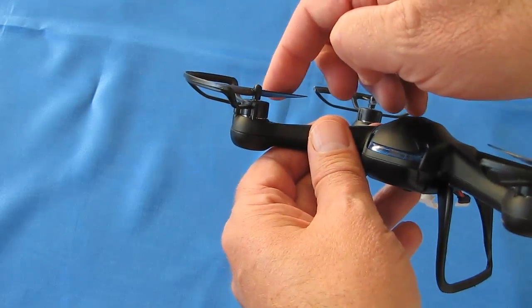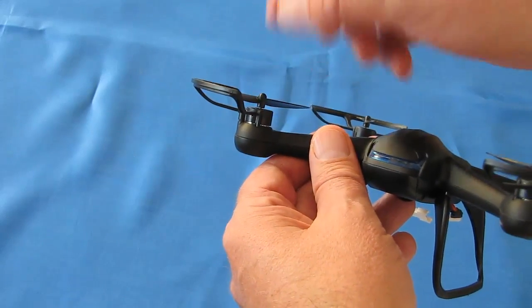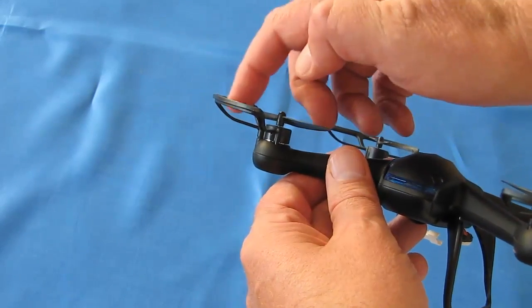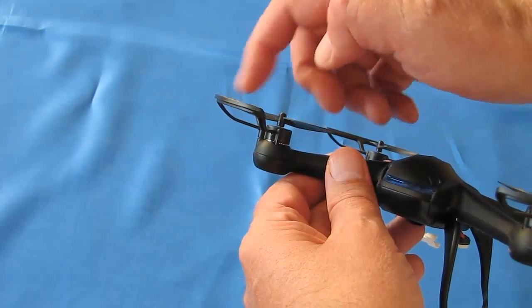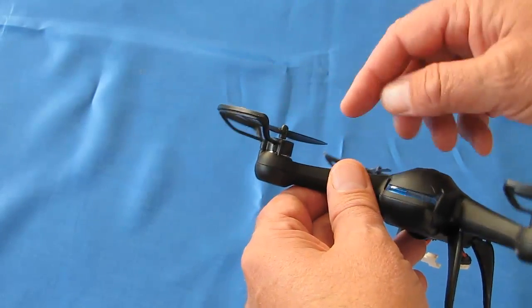I am not going to remove the prop itself, because each time you remove a prop and insert a prop, it just weakens the bind of the prop to the prop shaft, so I'm not going to do that. But I'll lift it up enough so that we can get a view of the diameter of this motor.